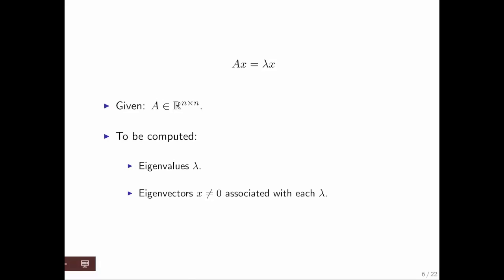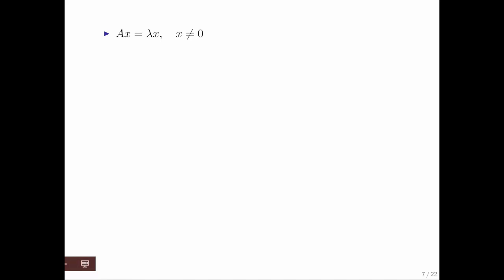And vectors x that are not the zero vector associated with each of these eigenvalues. So we start with Ax equals lambda x, where x should not be the zero vector.